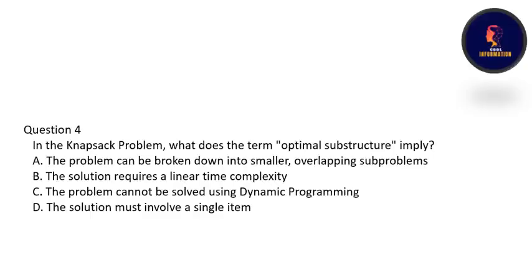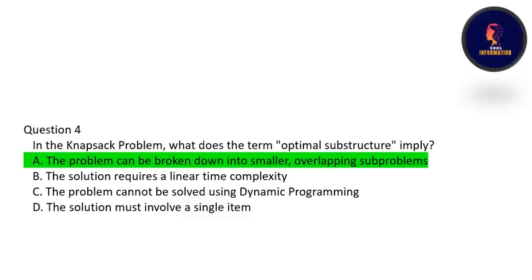In the knapsack problem, what does the term optimal substructure imply? The options include: the problem can be broken down into smaller overlapping subproblems, the solution requires linear time complexity, the problem cannot be solved using DP, or the solution must involve a single item. Optimal substructure means the problem can be broken down into smaller overlapping subproblems, so option A is correct.